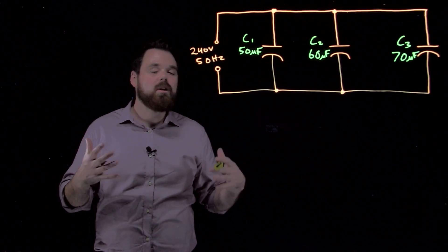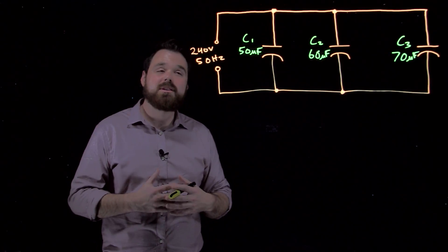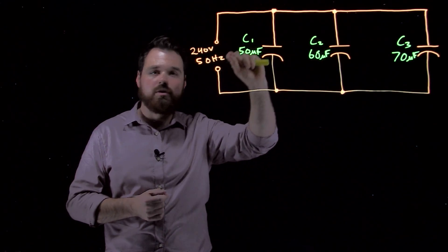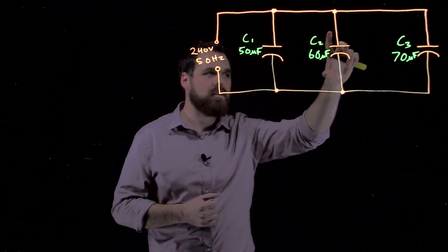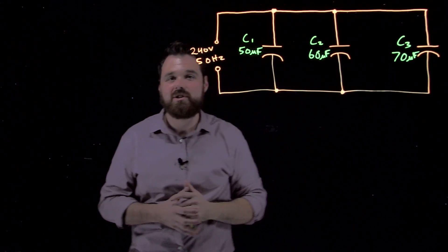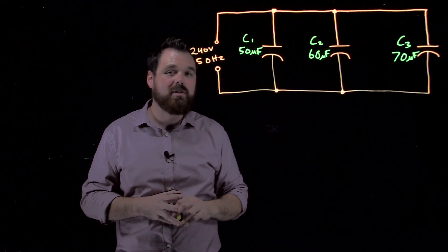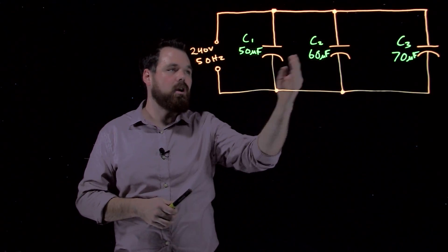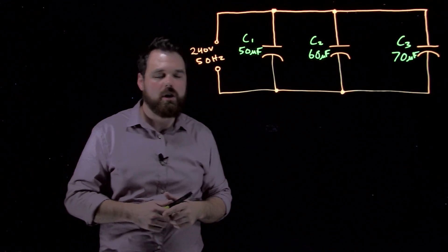Our general parallel circuit rules still apply. The voltage of our source is the same as the voltage here, is the same as the voltage here, and the same as the voltage down here. We also see the same rule for current apply where all of the currents added up are going to equal the total current.